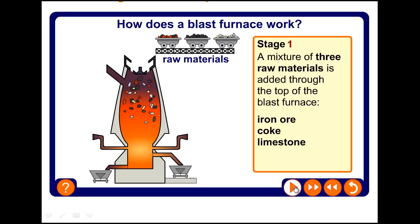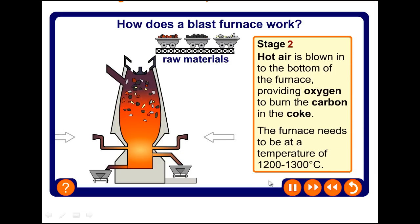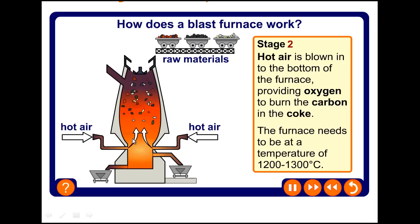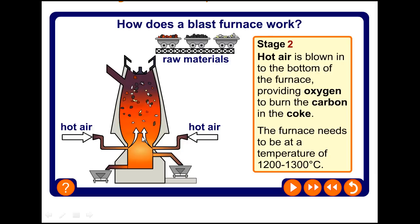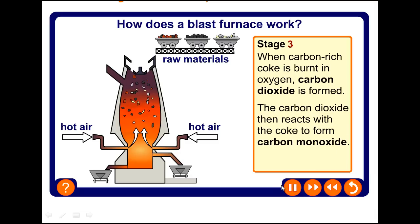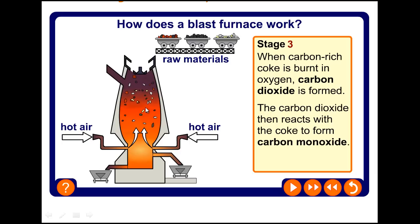In the second stage, hot air is blasted inside the furnace. In the lower zone, carbon reacts with oxygen to form carbon dioxide. In the middle zone, carbon dioxide is converted into carbon monoxide. Calcium carbonate is converted into calcium oxide and carbon dioxide, and that calcium oxide reacts with silica to form calcium silicate in the middle zone.